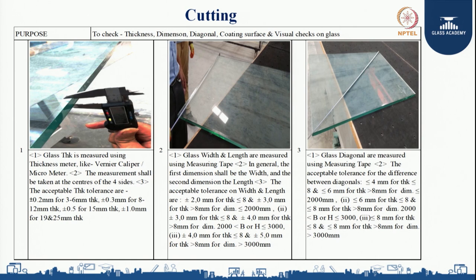Let us understand the dimensions. Glass width and length are measured using a measuring tape; the first dimension shall generally be width followed by length. Acceptable tolerances for width and length are plus or minus 2 mm for thickness less than or equal to 8 mm and plus or minus 3 mm for thickness more than 8 mm when panel dimension is less than or equal to 2000 mm; plus or minus 3 mm and plus or minus 4 mm for panel dimension between 2000 and 3000 mm; and plus or minus 4 mm and plus or minus 5 mm for panel dimension more than 3000 mm.